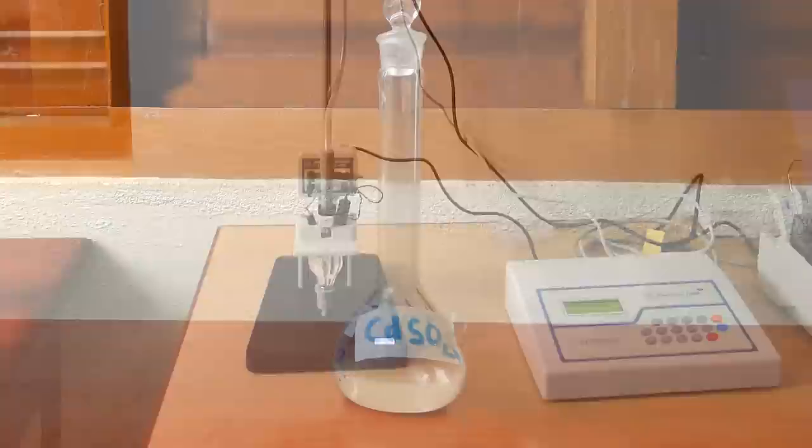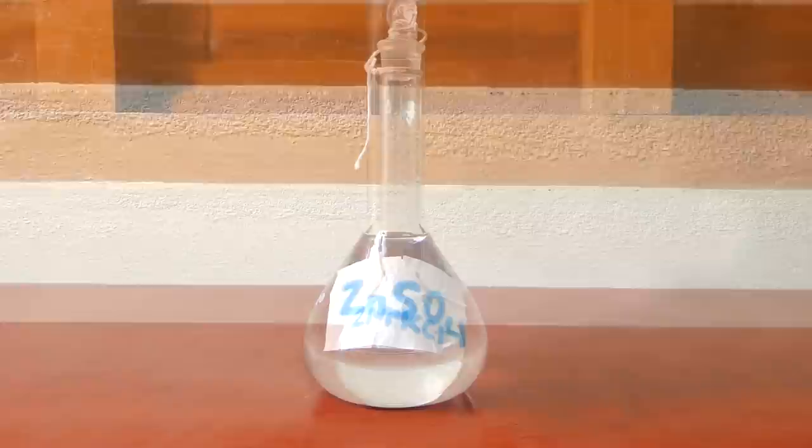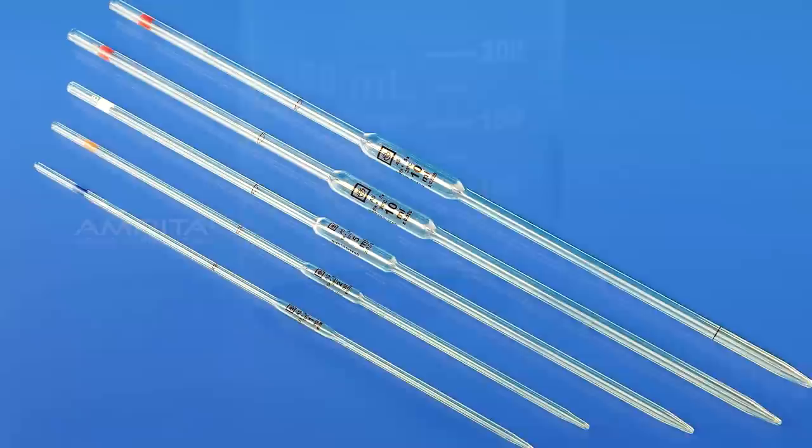Apparatus: Polarography equipment, standard solution of 1 mmol cadmium sulfate, 1 mmol zinc sulfate and 2 mol potassium chloride, distilled water, 250 ml beakers, 10 ml pipette, measuring jar.